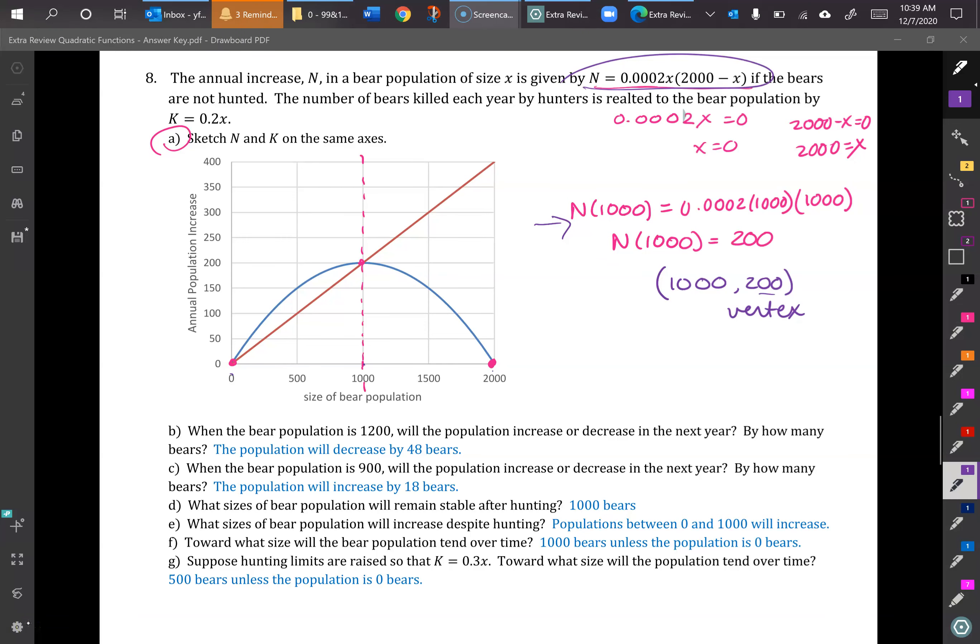Then for the linear you would just start at zero and increase 0.2x. I would just actually figure out what your y is at the vertex, get a couple points and pop them in and graph. So now that we have that sketch on there, we know this one is N and this one is k. When the bear population is 1200, what will the population increase or decrease in the next year? And by how many bears?